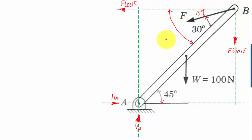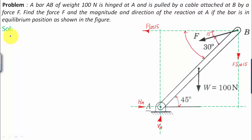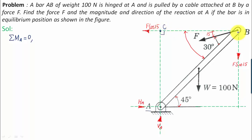We have three unknowns — HA, VA, and F — and three equations of equilibrium to solve them. Starting with the moment equation: the summation of moments of all forces about point A equals zero. For force F cos 15, we drop a perpendicular from A to its line of action, meeting at point C. The moment contribution is F cos 15 multiplied by perpendicular distance AC.